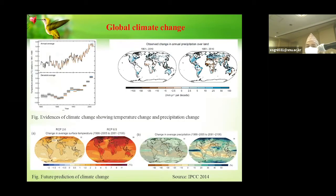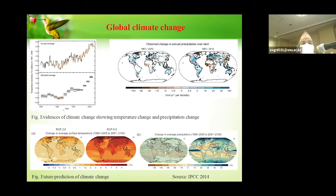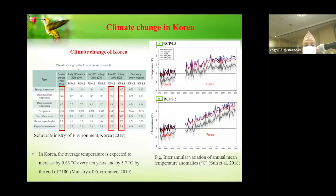As we know, global climate change is a burning issue in the world. We can see increasing temperature and precipitations in the past, and the prediction based on the RCP scenarios 2.6, 4.5, and 8.5 shows future projections. This is a problem for minor communities of organisms like butterflies and insects, up to big animals including human beings. The table shows increasing temperature and precipitations in the future, including average temperature and average precipitations.